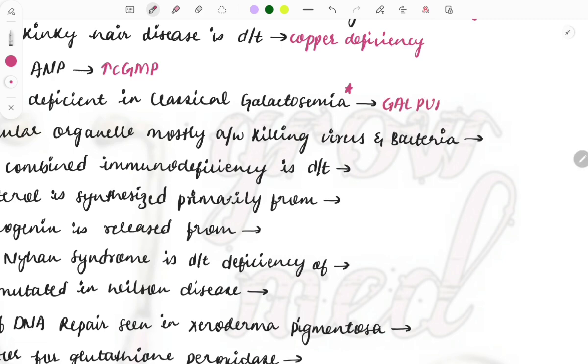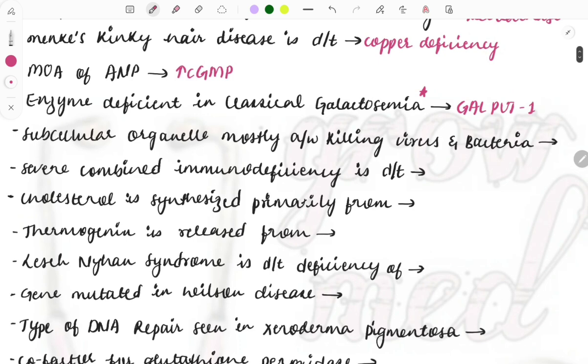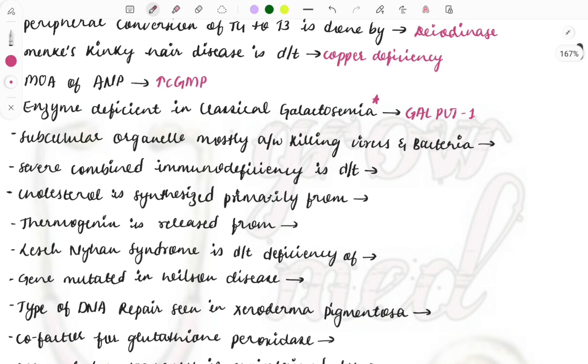Subcellular organelle mostly associated with killing of virus and bacteria? It is the lysosome. Lysosome kills the bacteria and also engulfs bacteria and viruses. The function of the organelles is also important, like mitochondria what does it do, then endoplasmic reticulum what does it do, so do read all those things also.